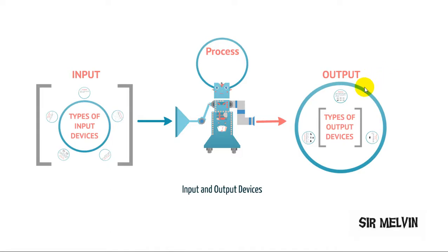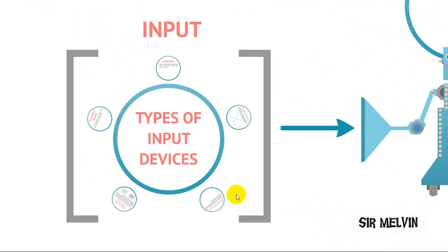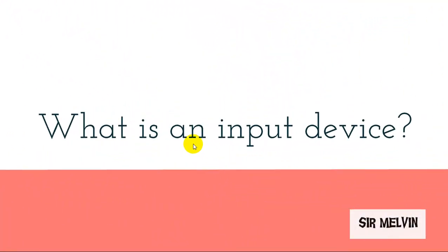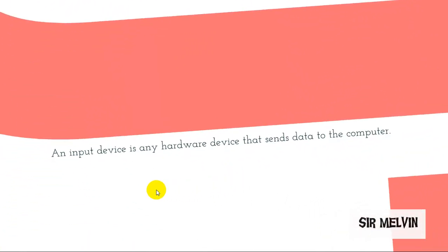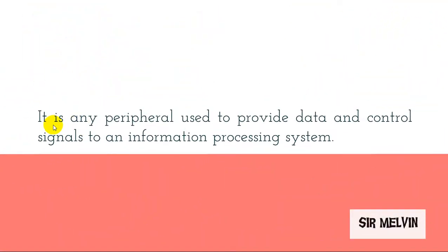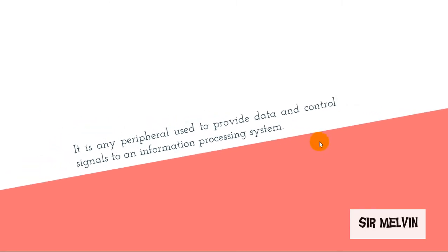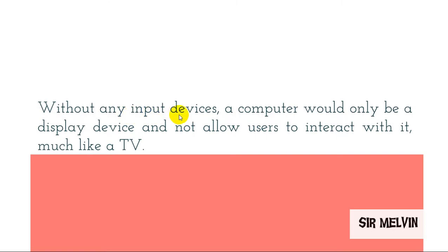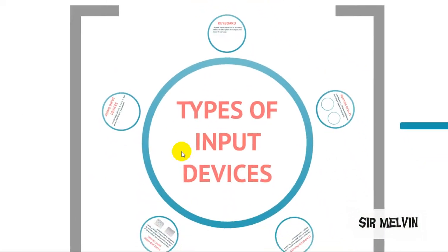Hello everyone. Today we will discuss input and output devices. An input device is any hardware device that sends data to the computer. It is any peripheral used to provide data and control signals to an information processing system. Without any input devices, a computer would only be a display device and not allow users to interact with it, much like a TV.